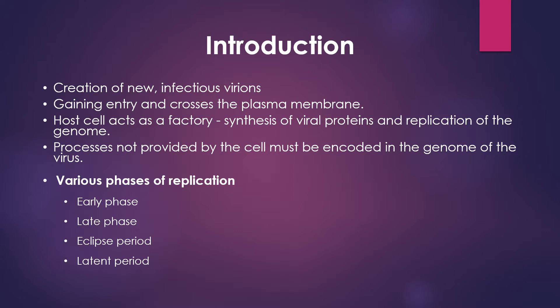A single replication cycle can be separated into several phases. The first one is the early phase, where the virus must recognize an appropriate target cell, attaches, and then penetrates the plasma membrane, later releasing the genetic material. In the second phase, the late phase, it begins with the start of genome replication and viral macromolecular synthesis and proceeds through viral assembly and release.